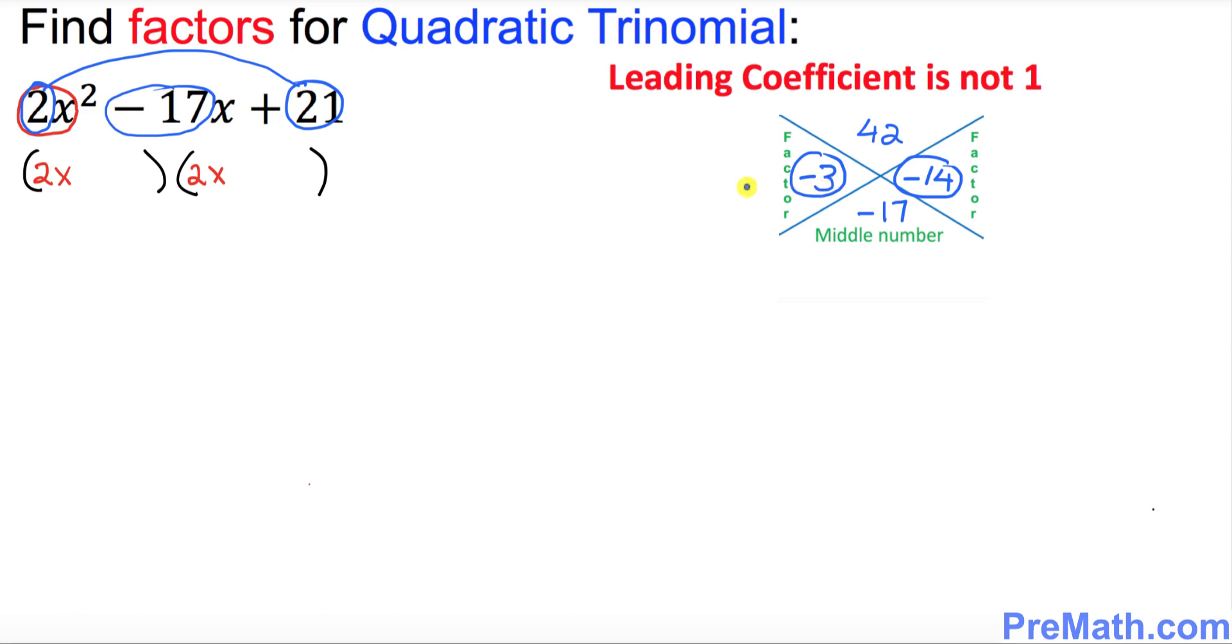I want you to put negative 3 in the first parentheses right up here and I want you to put negative 14 in the second parentheses.